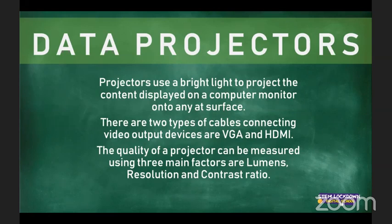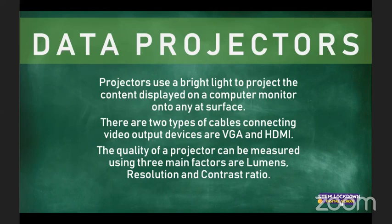The quality of projectors can be measured in three main factors: lumens, resolution, and contrast ratio. Lumens measures the brightness of the projector. Resolution determines how many pixels can be displayed at a given point. Contrast ratio measures the difference between the darkest and lightest parts of the image — the higher the contrast ratio, the better the quality of the picture.